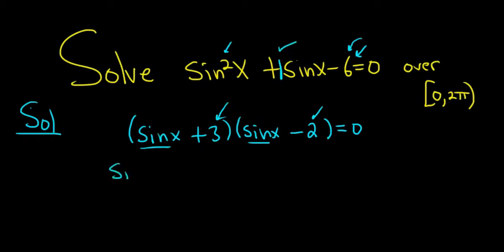So you have a product equal to 0. So we set each piece equal to 0. So sine x plus 3 equals 0, and sine x minus 2 equals 0.